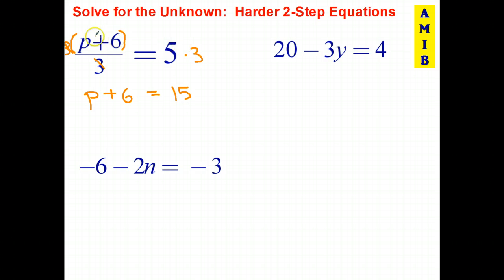Once again, a two-step equation has become a one-step equation. Subtract six from both sides. That's the opposite of adding. Plus six minus six is equal to zero. And p plus zero is just p. And 15 take away six is nine. Let's do a quick check on that. Nine plus six is 15. 15 divided by three is five. So that is correct.